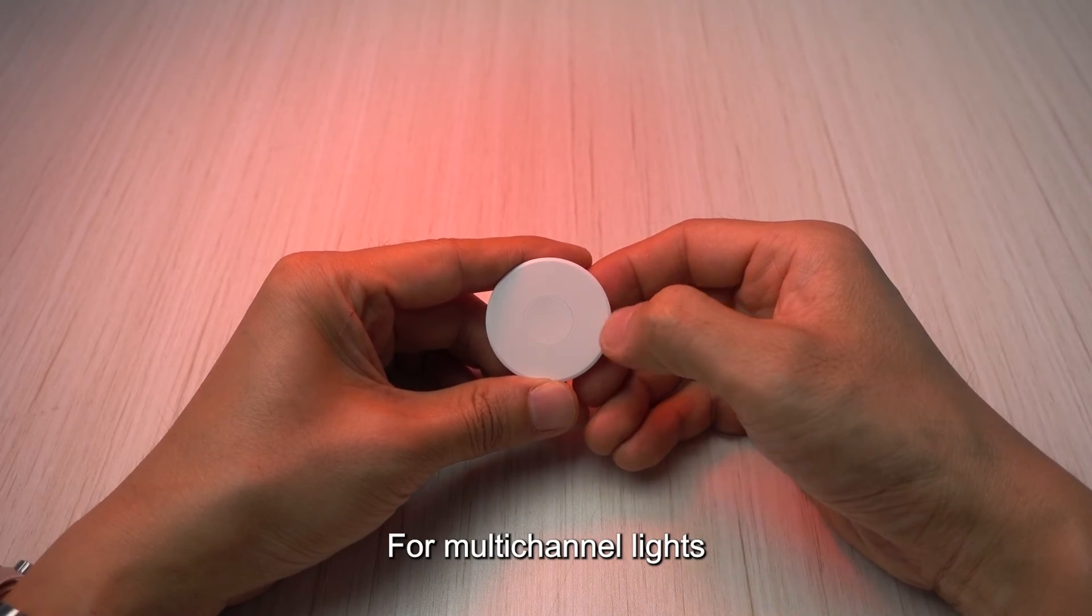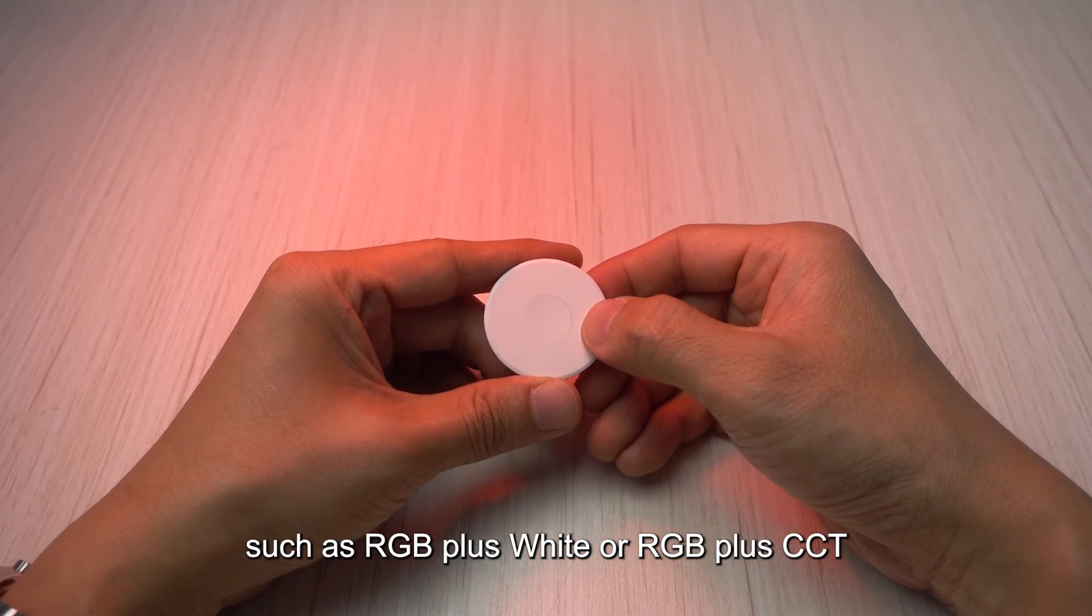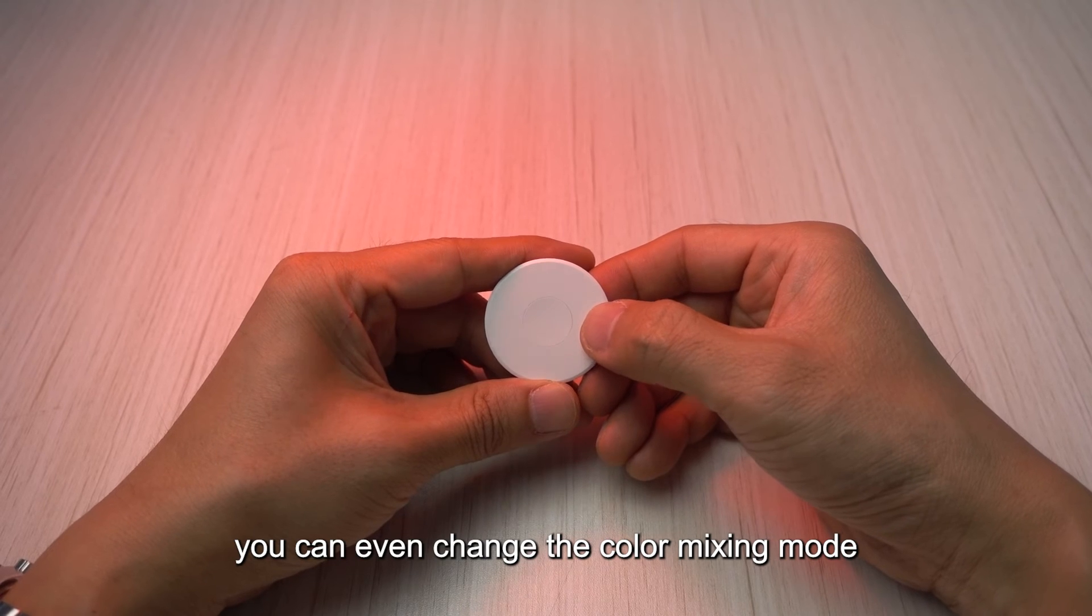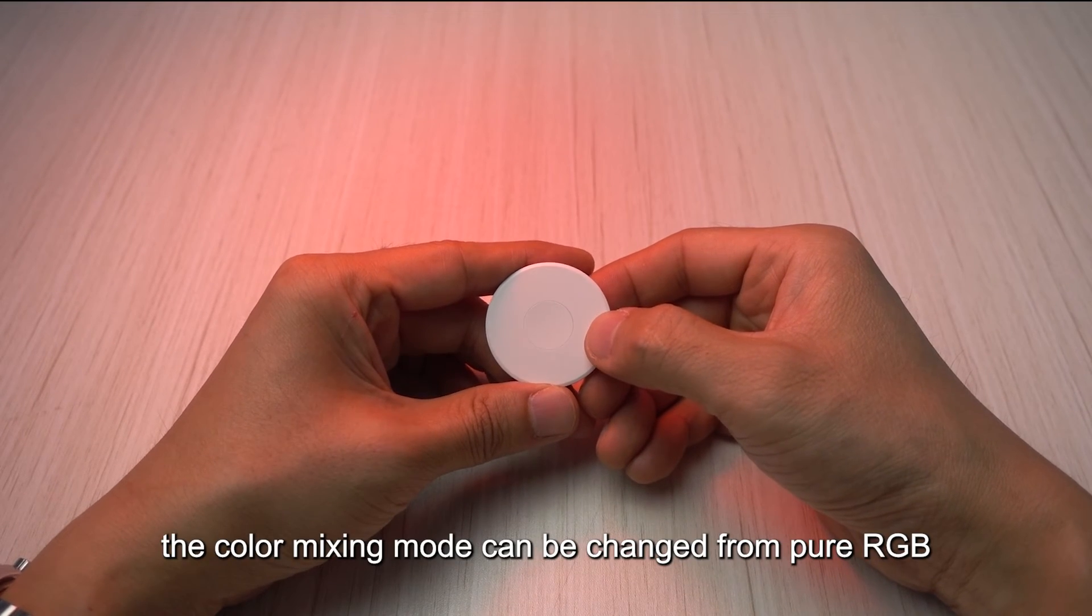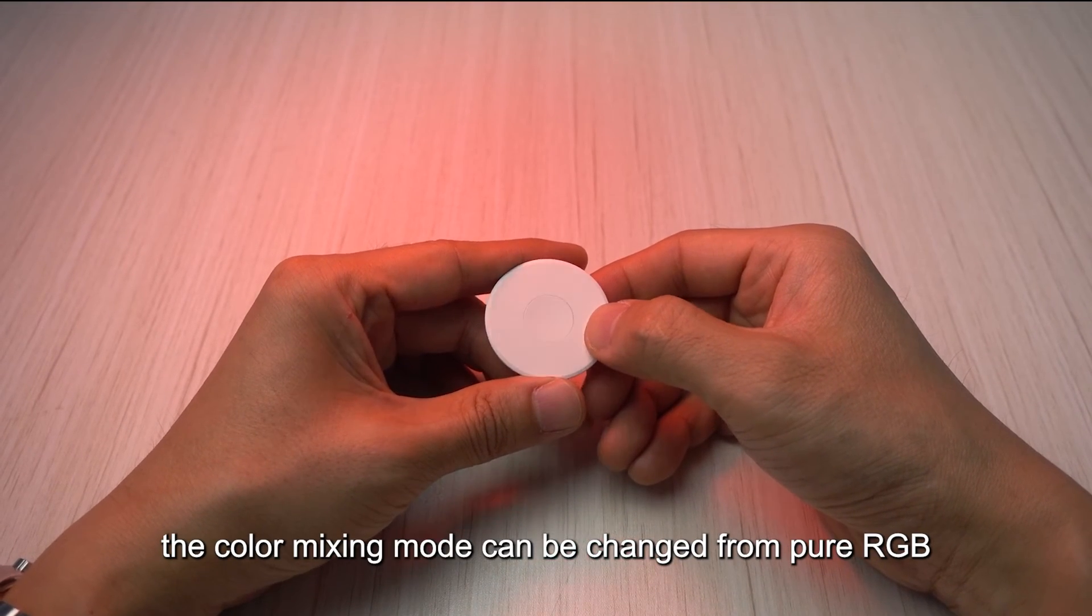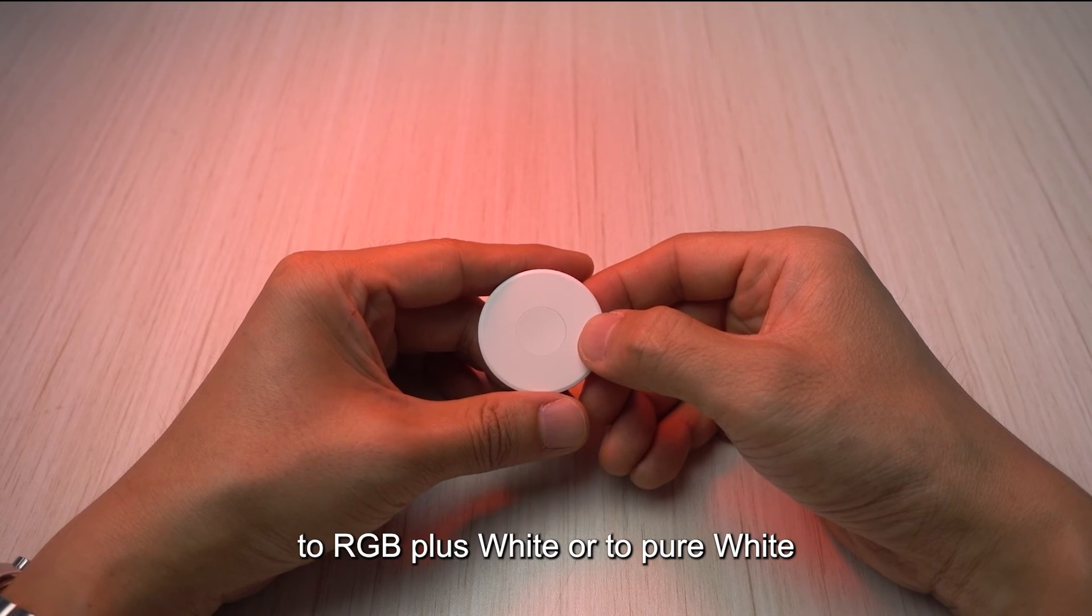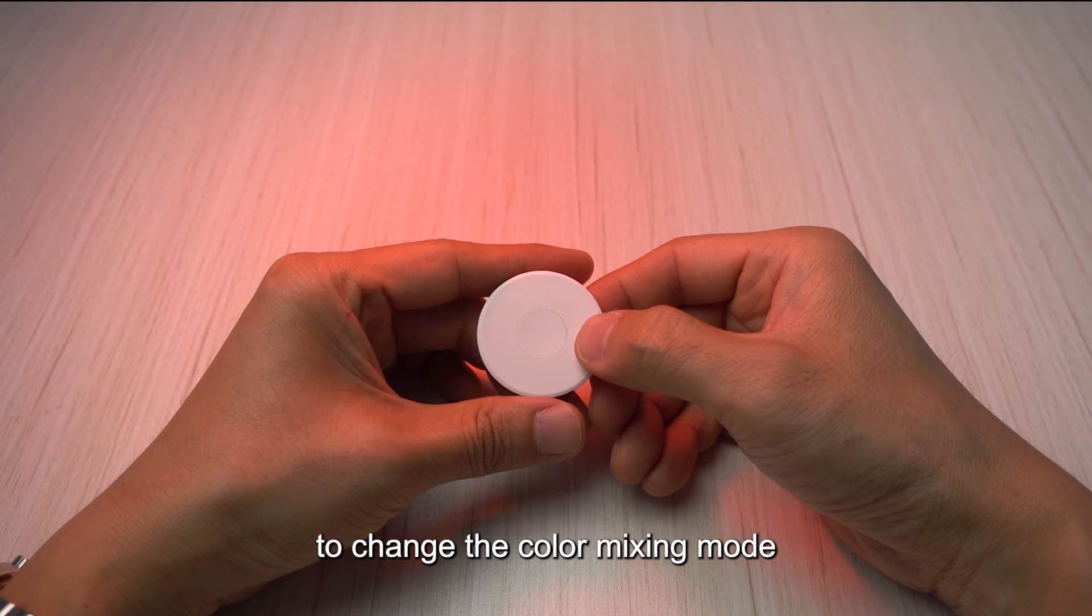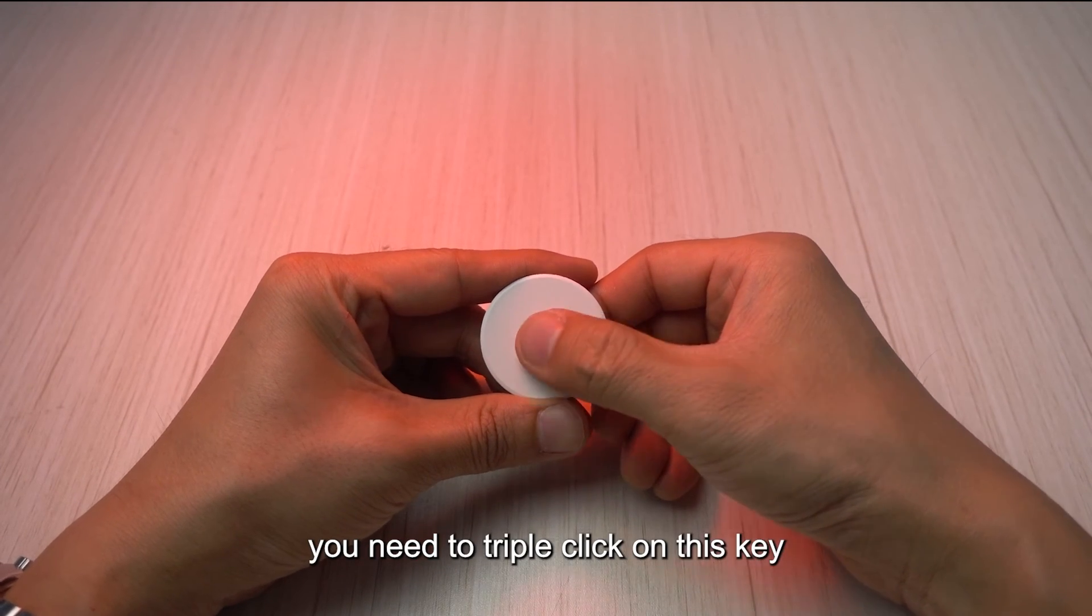And for multi-channel light such as RGB plus white or RGB plus CCT, you can even change the color mixing mode. The color mixing mode can be changed from pure RGB to RGB plus white or to pure white. To change the color mixing mode you need to triple click on this key.